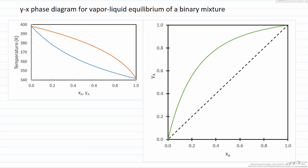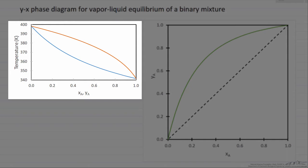In this screencast I'm going to describe a y-x phase diagram for vapor-liquid equilibrium of a binary mixture. First let's look at a temperature mole fraction diagram. We're looking at an ideal solution.